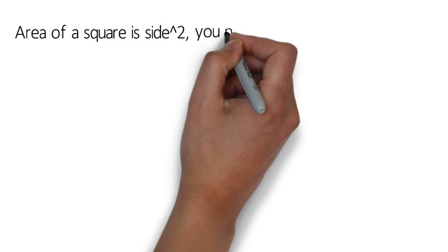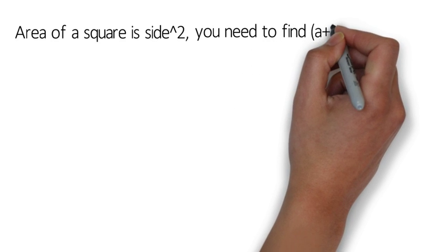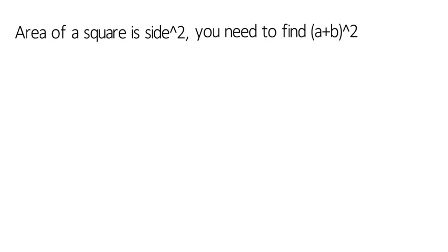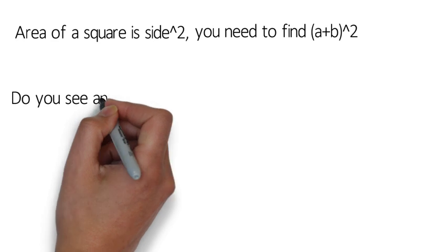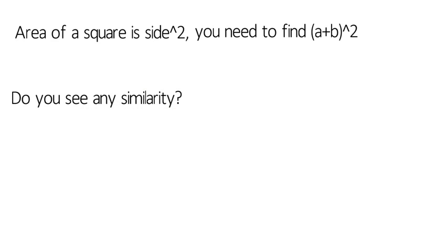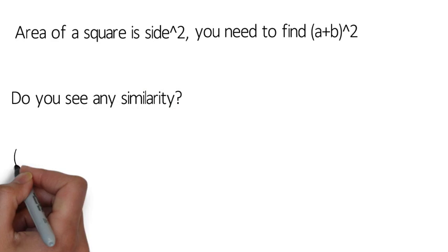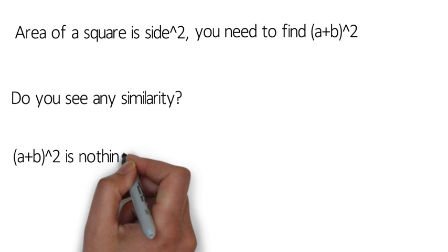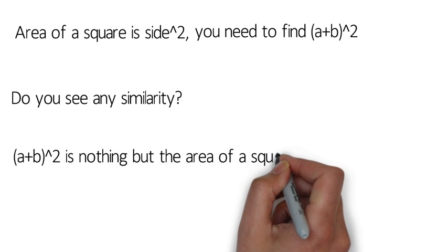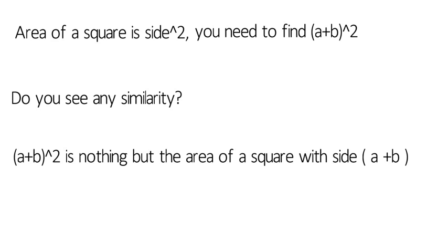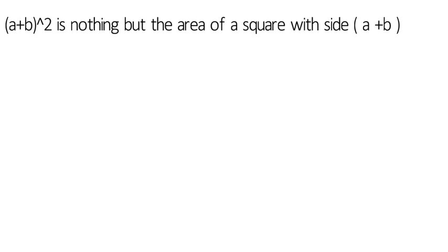(a+b)² is nothing but the area of a square with side a+b. Let's analyze more on this.